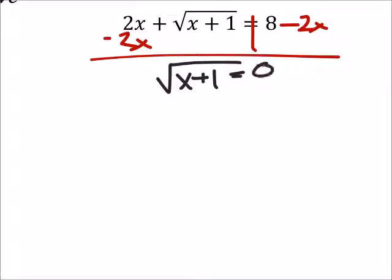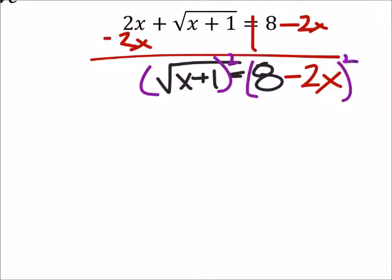Now this equals 8 minus 2x. So to get rid of that radical, that's a square root, so I would have to square that, which means I'm going to have to square the other side of the equal sign.